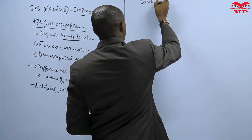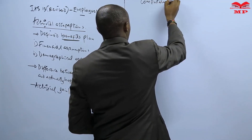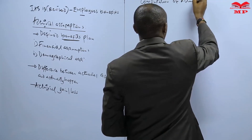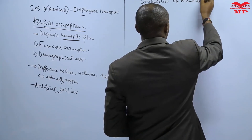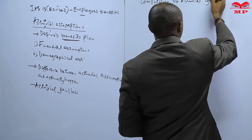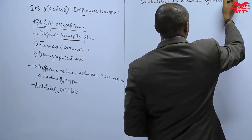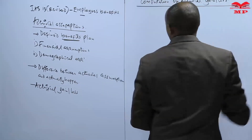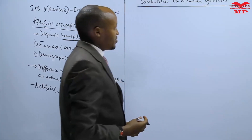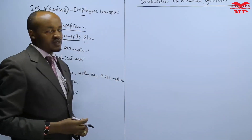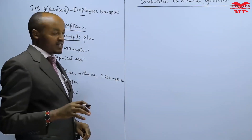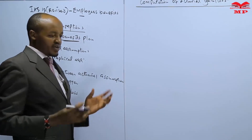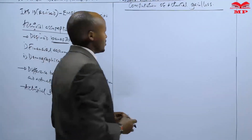We need to look at how we compute this particular actuarial gain or loss. Whenever this actuarial gain or loss is to be computed, it should be computed both in respect to the plan asset and also in respect to the present value of the defined benefit obligation.